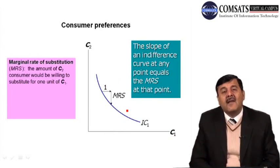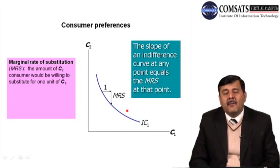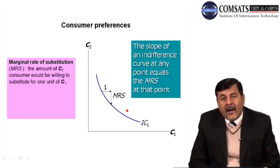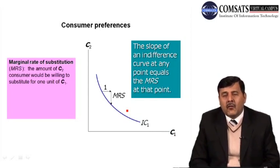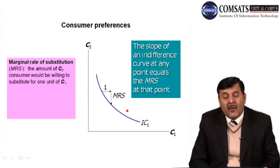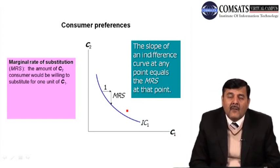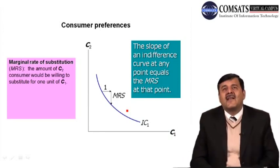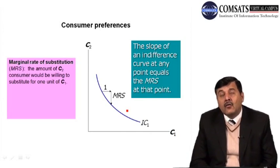The slope of the indifference curve is the marginal rate of substitution (MRS). When we consider consumption in two time periods C1 and C2, MRS is how much C2 the consumer is willing to substitute to get one more unit of C1. The slope at any point on the indifference curve equals the MRS at that point. The MRS declines as the consumer continues to substitute one consumption for another.